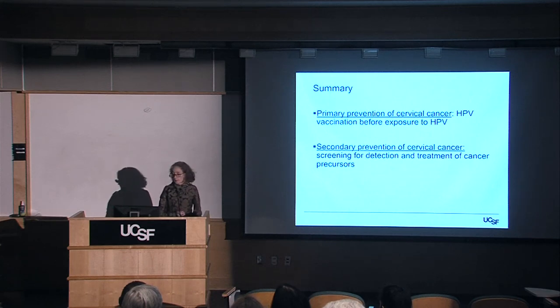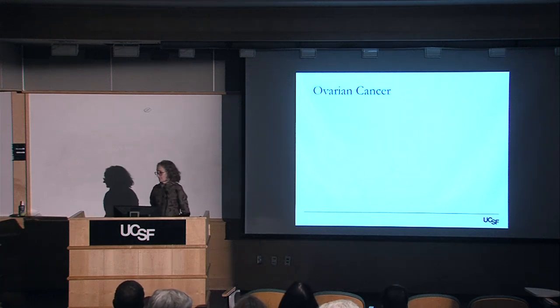Dr. Chapman now takes over to discuss ovarian and uterine cancers. Unlike the cervix, which is visible and accessible — though the speculum exam is not the most comfortable — the ovaries and uterus are quite hidden. The uterus sits almost underneath the pubic bone, deep in the pelvis, and the majority of pelvic space is occupied by small bowel and colon. Ovaries have a lot of space to grow and cause masses before symptoms develop.